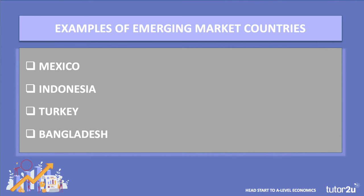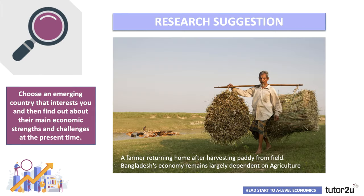Here are four examples of emerging market countries: Mexico, Indonesia, Turkey, and Bangladesh. There are different stages of development, but they're all categorised as emerging countries. One suggestion is to choose one or two countries that particularly interest you — an emerging or developing country — and find out about their main economic strengths and challenges at the present time. A lot of students are particularly interested in countries like Vietnam, Bangladesh, and Indonesia, which could well become some of the powerhouse countries in the world in decades to come.